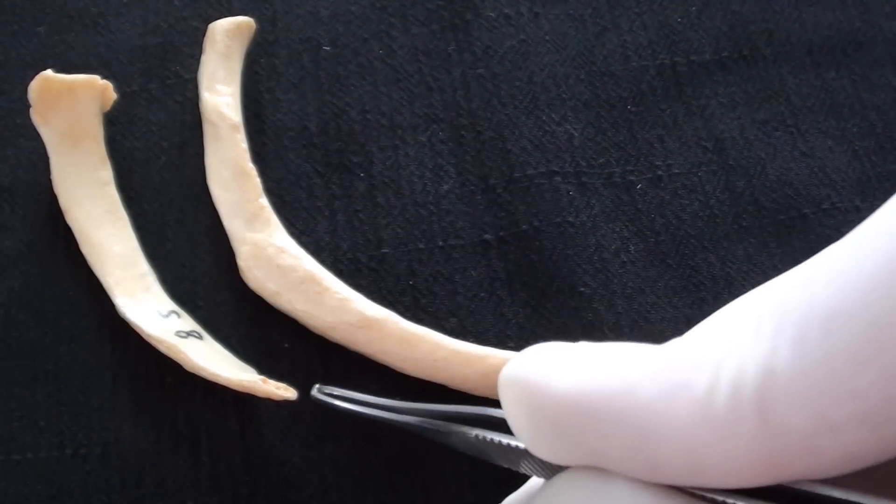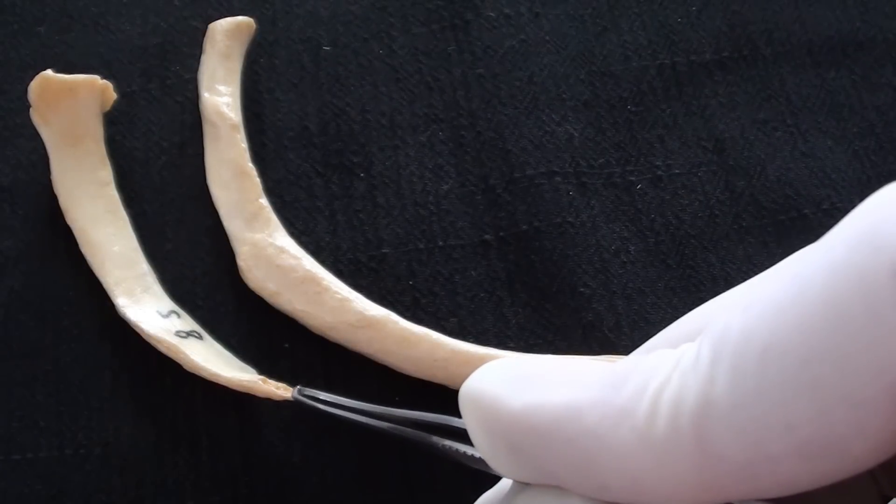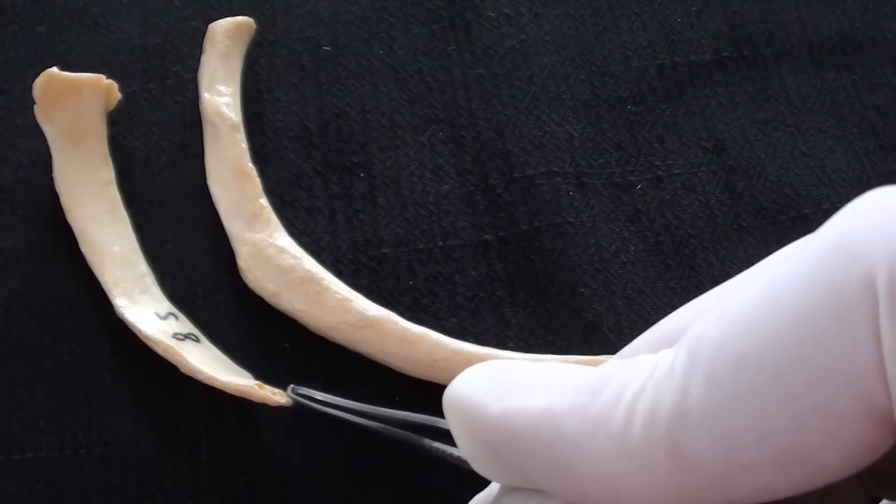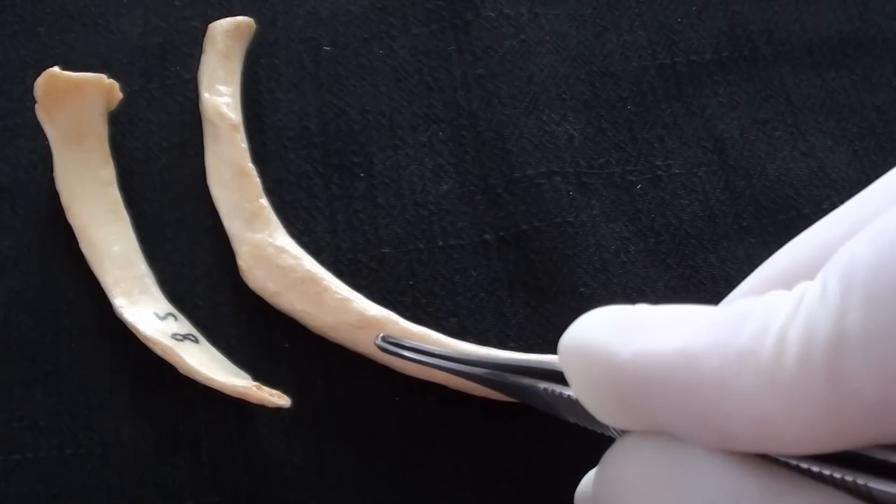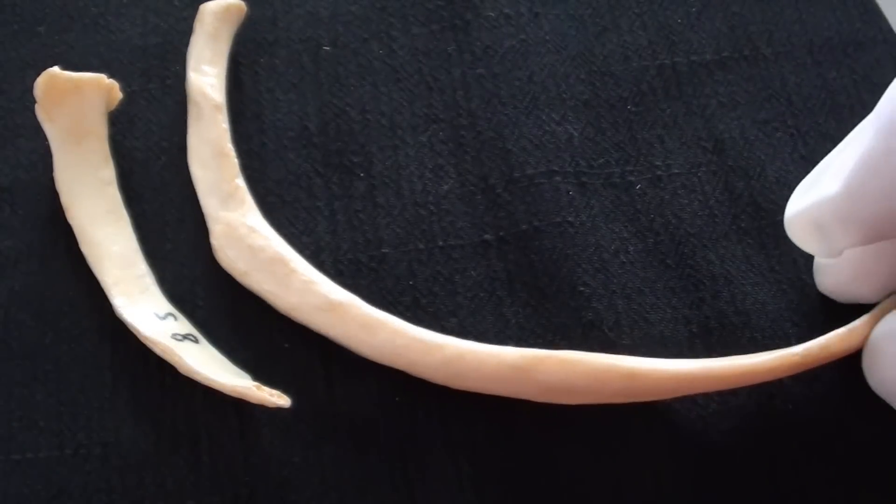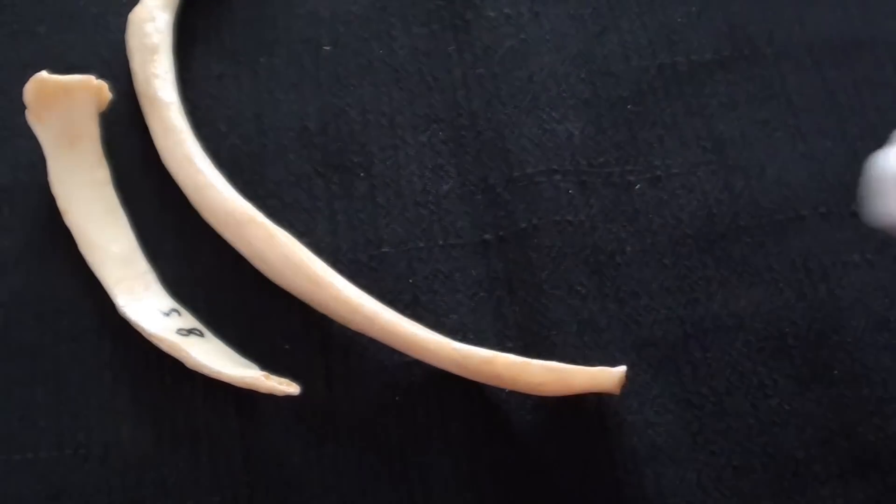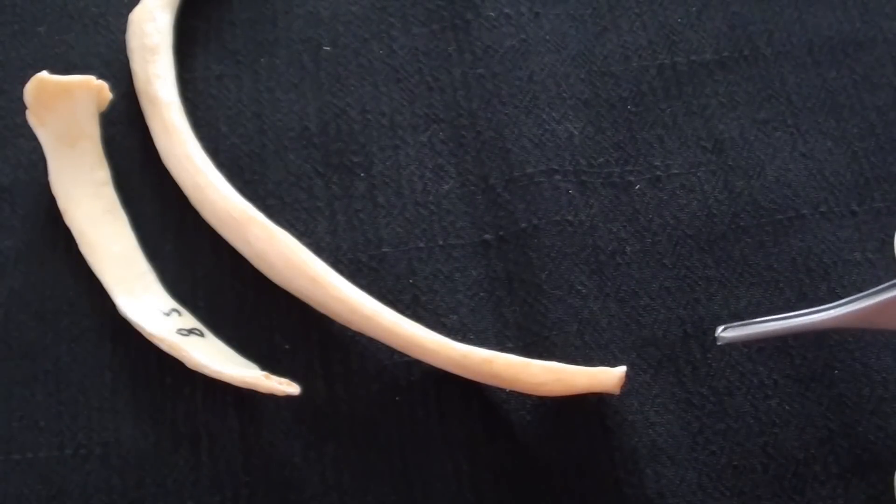referring to their pointy end that usually lacks the cartilage and for that reason ribs 11 and 12 with their most anterior tips do not establish the contact with the rest of the chest wall, for that reason they are referred to as floating ribs.